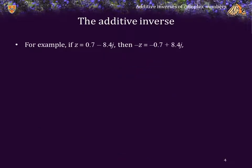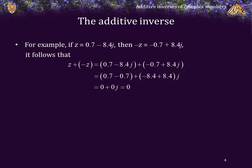So for example, if z is equal to 0.7 minus 8.4 j, then the additive inverse of z is negative 0.7 plus 8.4 j. And we see that if we add these two numbers together, we do get zero.